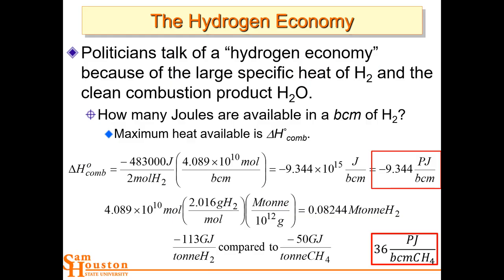Let's talk about the hydrogen economy. If we do the delta H of combustion for two moles of hydrogen and convert using moles per billion cubic meters, we end up with only 9 petajoules per billion cubic meters — whereas the World Energy Council value is 36 petajoules per billion cubic meters of natural gas. We don't buy hydrogen by the gram, we buy it by volume, and hydrogen is the least compressible gas. So we can't stuff as much hydrogen into a container as we can methane. It's about one-fourth the energy content of natural gas by volume. So natural gas makes more sense.